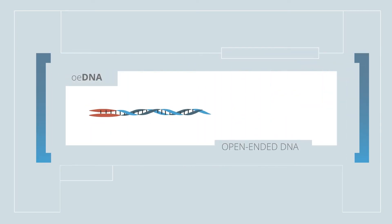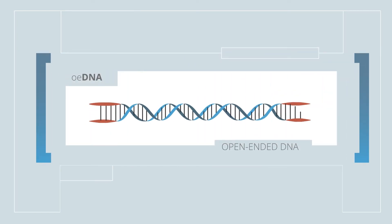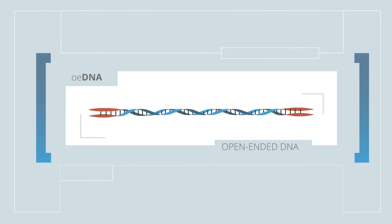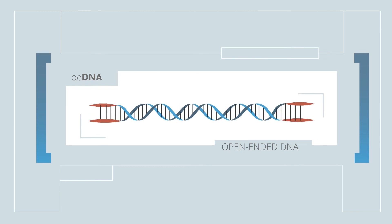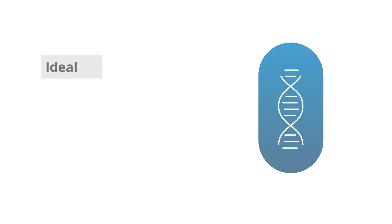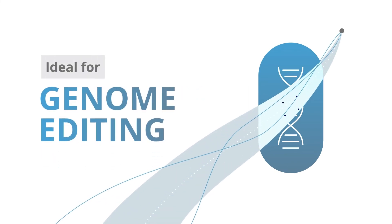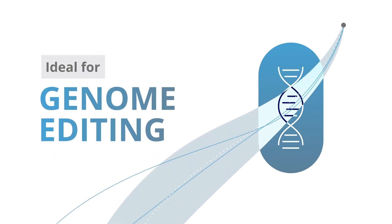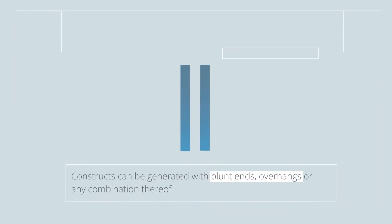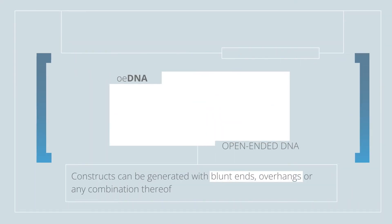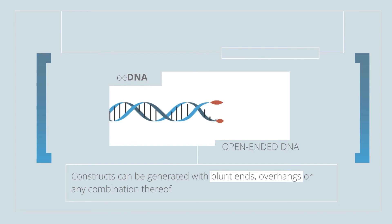OEDNA, or open-ended DNA, is a linear, double-stranded DNA product where both 3' and 5' ends are open, and is ideal for genome editing by homology-directed repair. Constructs can be generated with blunt ends, overhangs, or any combination thereof.